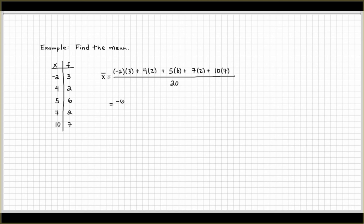Then we do the math. Negative 2 times 3 is going to give you negative 6. 4 times 2 is 8, and so forth. And then you divide that by 20. Then you add the top and then you divide by 20. And that's going to give you 5.8.